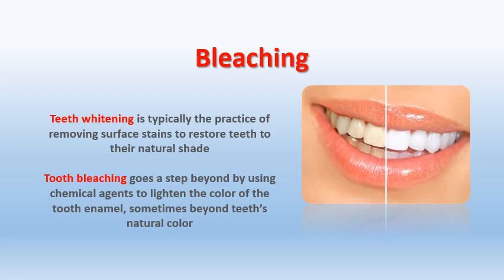Teeth whitening is removing the surface stains to restore the teeth's original or natural shade. I do not affect the actual natural shade of the tooth. It's done either by scaling and polishing or resurfacing, but I restore the tooth to its natural shade by removing the stains. On the contrary, tooth bleaching refers to changing the original shade of the tooth to a lighter one through a chemical agent applied on the tooth or inside it.